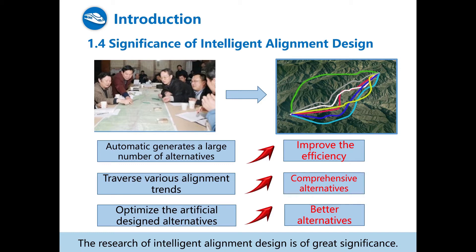First, the automatic alignment design can generate a large number of alternatives automatically. That is, the efficiency of alignment design can be greatly improved. Then, we can compare various alignment solutions. That is, a more comprehensive evaluation of the alignment solution can be done.